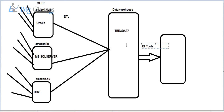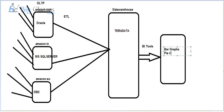Who uses a data warehouse? It is completely used by business users like the CEO, sales distribution managers, and marketing managers of the company. The data warehouse comprises two modules: one is ETL, which integrates data from all transactional systems into the warehouse, and the other is reporting — generating reports in the form of bar graphs or pie charts using different BI tools.